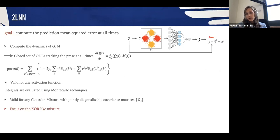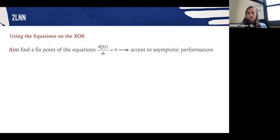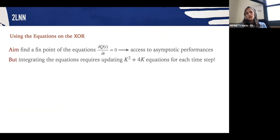However, for simplicity, since here we wanted to analyze the performance of two-layer neural networks and random features, we're going to focus on XOR-like mixtures. Something else that is of interest to us is to assess the asymptotic performances of the neural network, that is their long-time performances. However, if I take the ODEs I've just derived and integrate them until convergence, this requires updating k squared equations at every time step and so it takes very long.